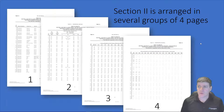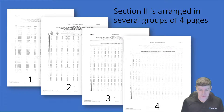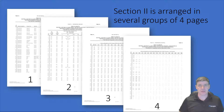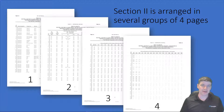What you'll see is a bunch of tables that look like tabular data. Take a look at them and you'll notice it's really a repeating set of pages — they repeat every four pages. So we have a series of pages 1, 2, 3, 4, and then that same pattern exists again: 1, 2, 3, 4.